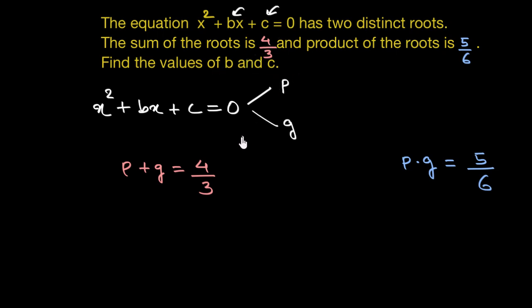Wait, first of all, let me tell you what that relation is. For a general quadratic equation, ax square plus bx plus c, sum of the roots is given as negative of coefficient of x, that is negative of b divided by coefficient of x square, that is a. And product of roots is given as constant term c divided by coefficient of x square again, that is a.